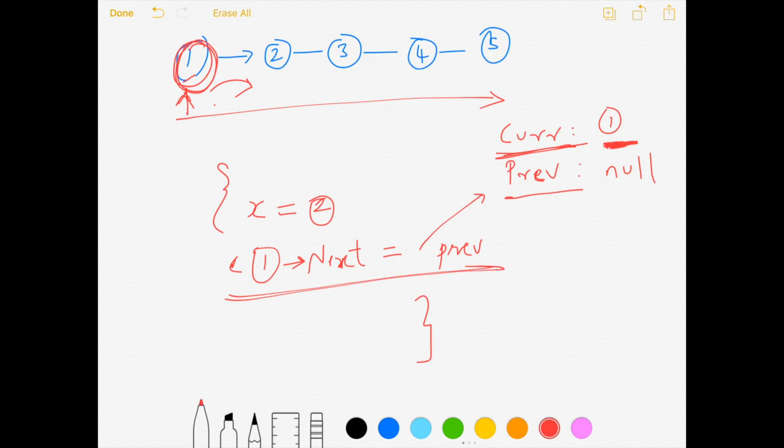In this case, the next value or the next node after one will become null. And once we do that, now we are about to set the values for the next iteration or the next loop. So we need to update a couple of values.